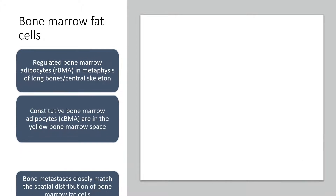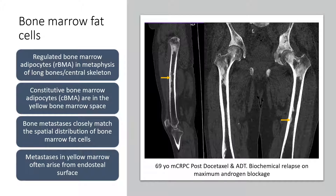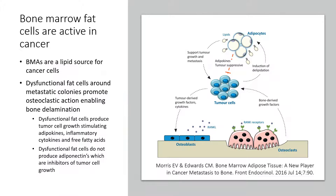Metastatic disease tends to go mostly to the axial skeleton with relatively little disease in the shafts of the bone marrow, and when disease does appear in the shaft it is up against the endosteal surface. Bone marrow fat cells serve as a lipid source utilized by cancer cells. Adipocytes around metastatic colonies also promote osteoclastic action, enabling bone metastases to enlarge by bone delamination.